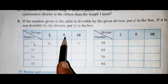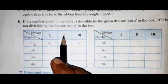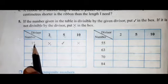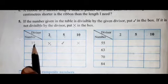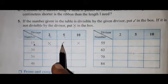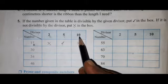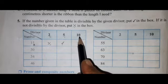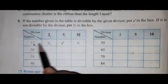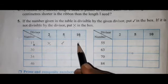Next divisor is 5. The divisibility test of 5: if the unit place digit is 0 or 5, the number is divisible by 5. So 15 is divisible by 5 — correct answer, put tick. Third divisor is 10. Divisibility test of 10: if the unit place is 0, the number is divisible by 10. So 15 is not divisible by 10; put cross.